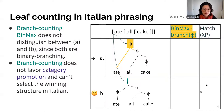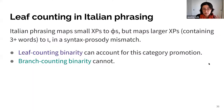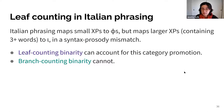This really needs to be leaf counting binarity. If we substitute in branch counting binarity, unlike the Irish case, branch counting doesn't distinguish between these two candidates because both of them are perfectly binary branching — the choice would be left up to match, which would favor the isomorphic candidate. Branch counting does not favor category promotion and can't select the winning structure in Italian.